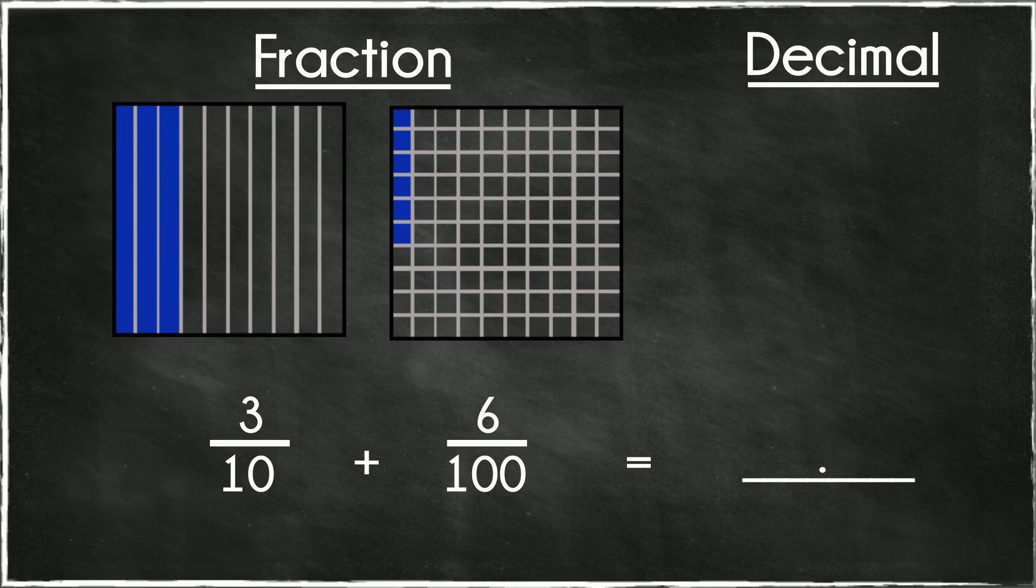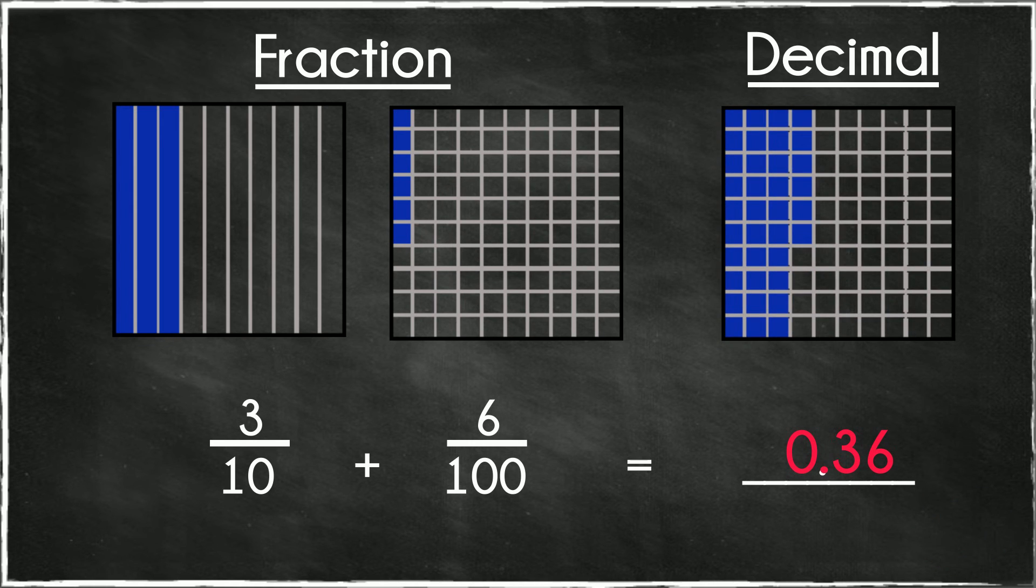Let's try a couple more. 3 tenths plus 6 hundredths. Show the answer as a decimal. Pause here. The answer is 36 hundredths, 0.36.